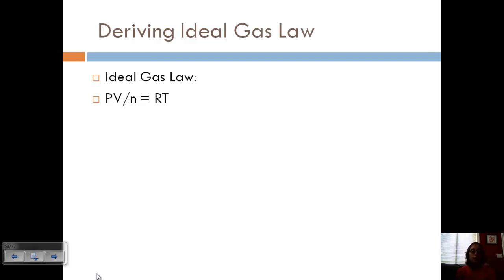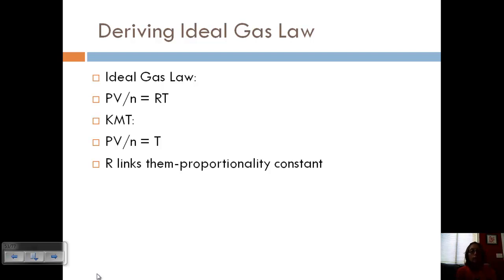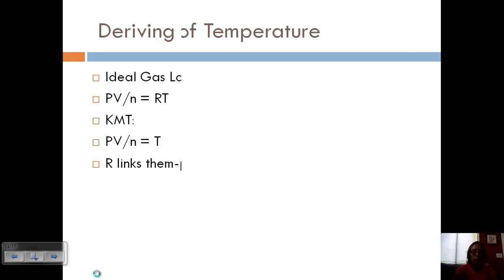Now let's look at how we derive the ideal gas law based on all of those relationships. We know the ideal gas law is PV equals nRT — or written as PV over n equals RT. If we use kinetic molecular theory and all those relationships, we come up with PV over n equals T. The only difference is the gas constant R, which links the relationships from kinetic molecular theory and the ideal gas law together. It's called a proportionality constant — a constant value we use in our calculations.